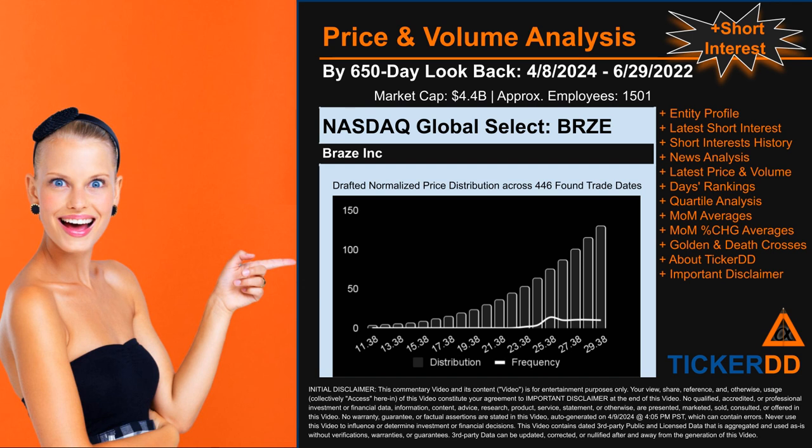The chart shown on this page is our initial attempt at studying the price for BRZE after dynamically normalizing price distribution across those 446 discovered trade dates. The bar chart is the generated distribution and the overlaid line graph, if generated, is the frequency of the prices on the x-axis. We will enhance this look-through as our model progresses in the next iteration. Remember that this is just a drafted, in-progress observational model to best fit abstracted third-party data into various opinionated views.